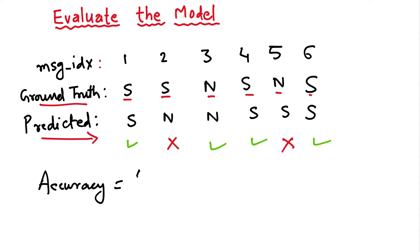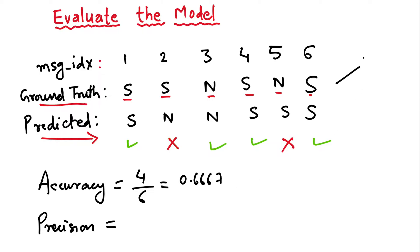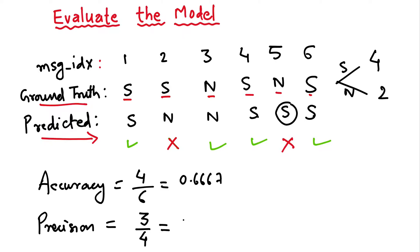Accuracy: the model got 4 out of 6 correct, so accuracy is 0.6667. For precision: there are 4 spam and 2 non-spam messages in ground truth. The model predicted 4 as spam; out of those, 3 are correctly predicted as spam — so precision is 3 by 4, or 0.75.